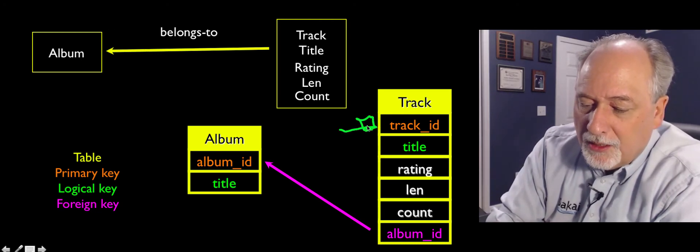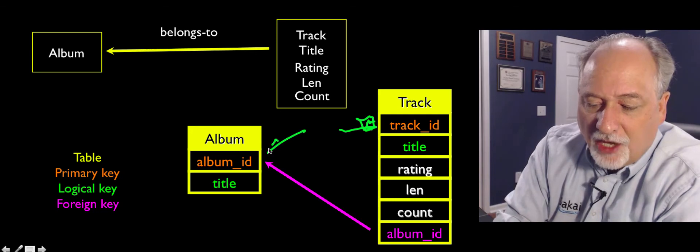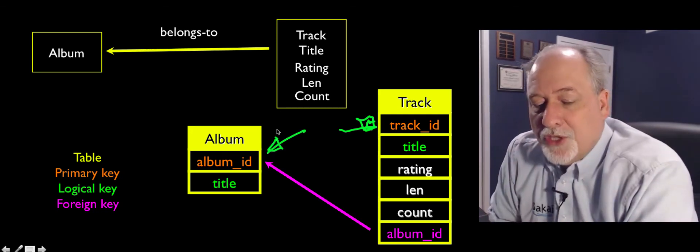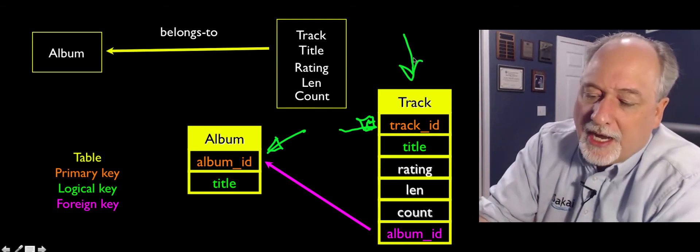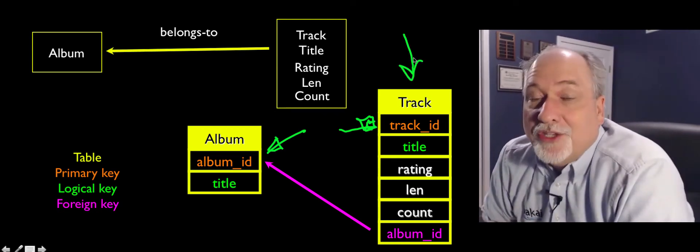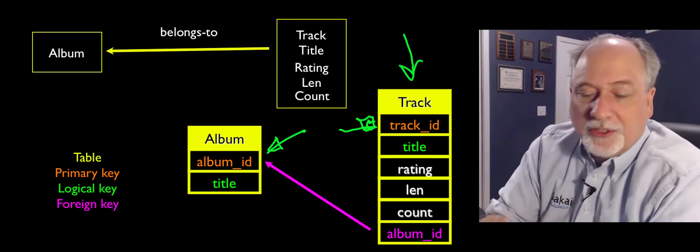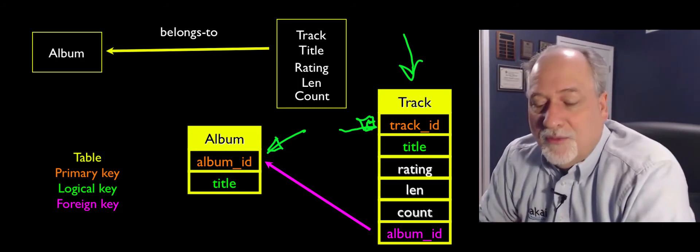Then what we do is we add, for bookkeeping, a primary key to the track and to the album, just so we have a little handle to grab tracks as well. We don't have anything pointing to tracks, but in our application, eventually, we might be more complex and have something pointing at tracks. So we put these little primary keys in just almost automatically.